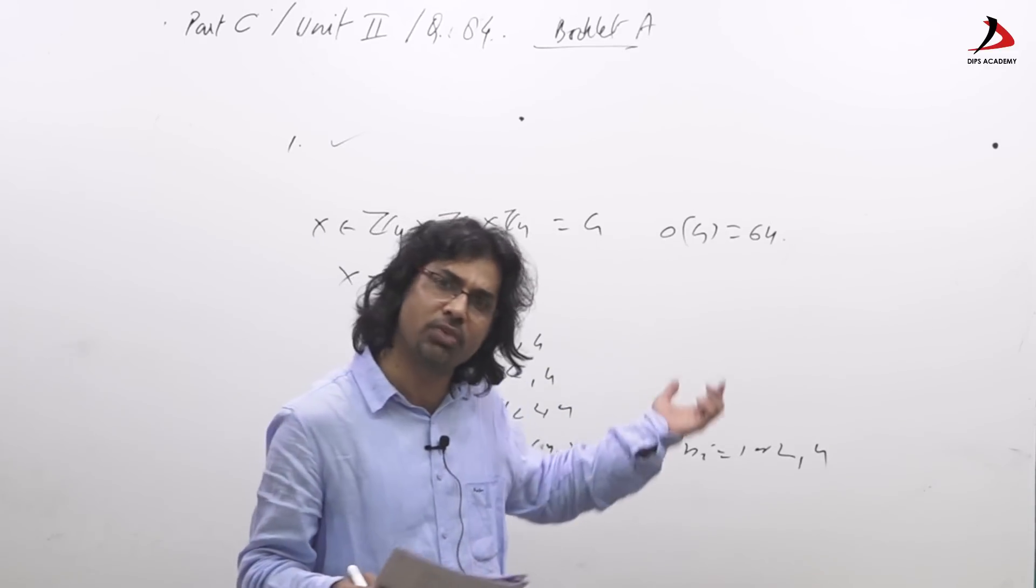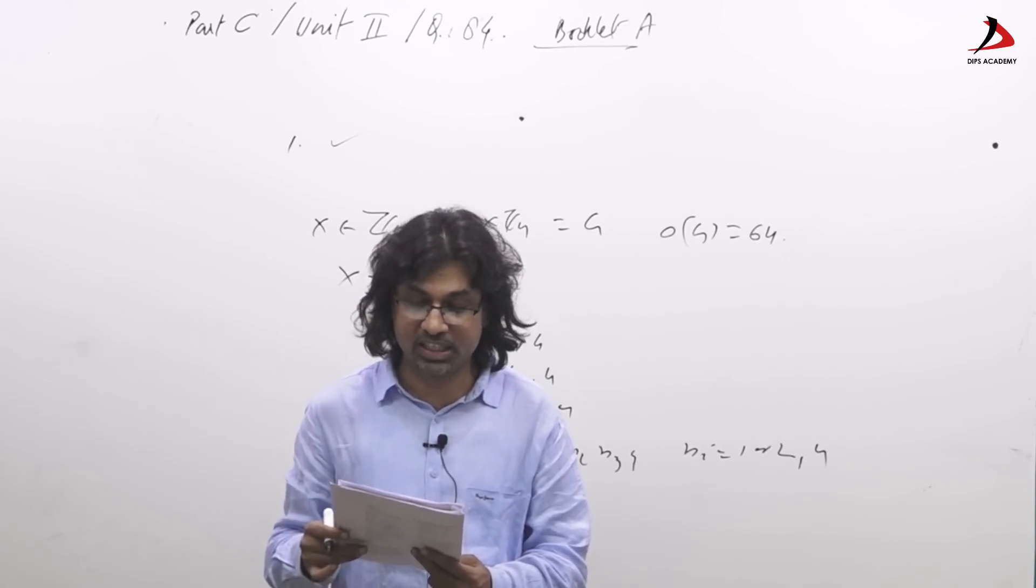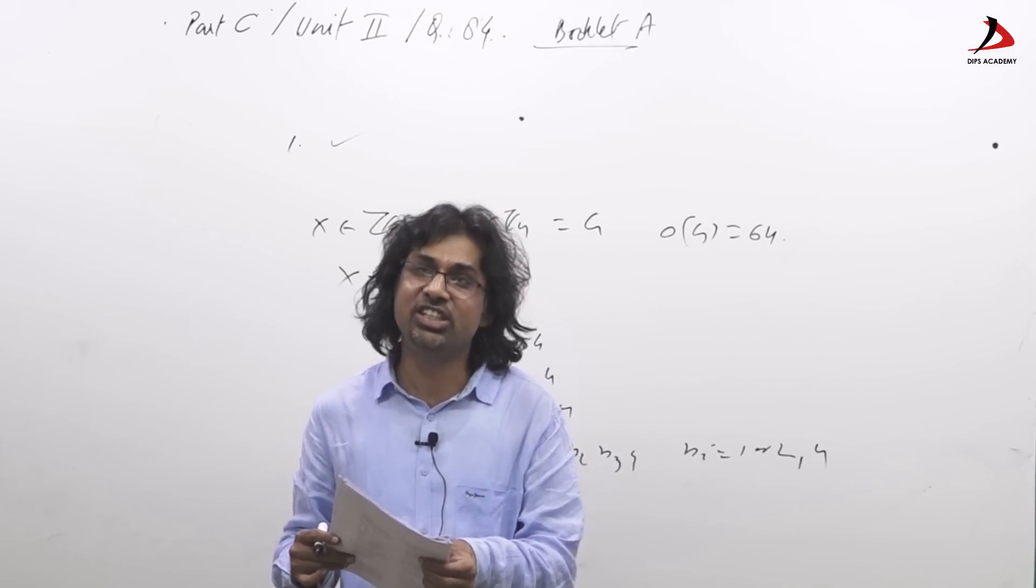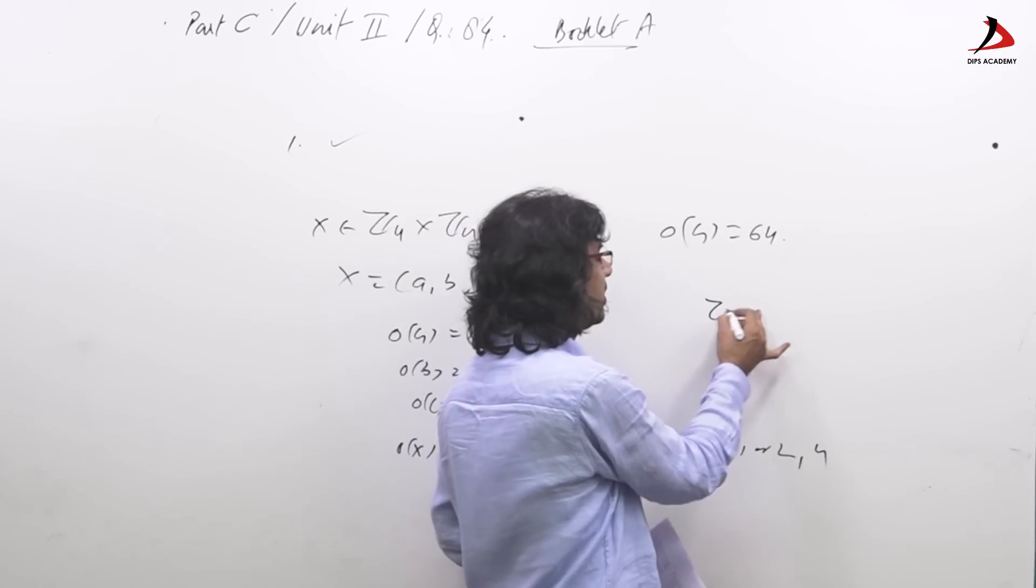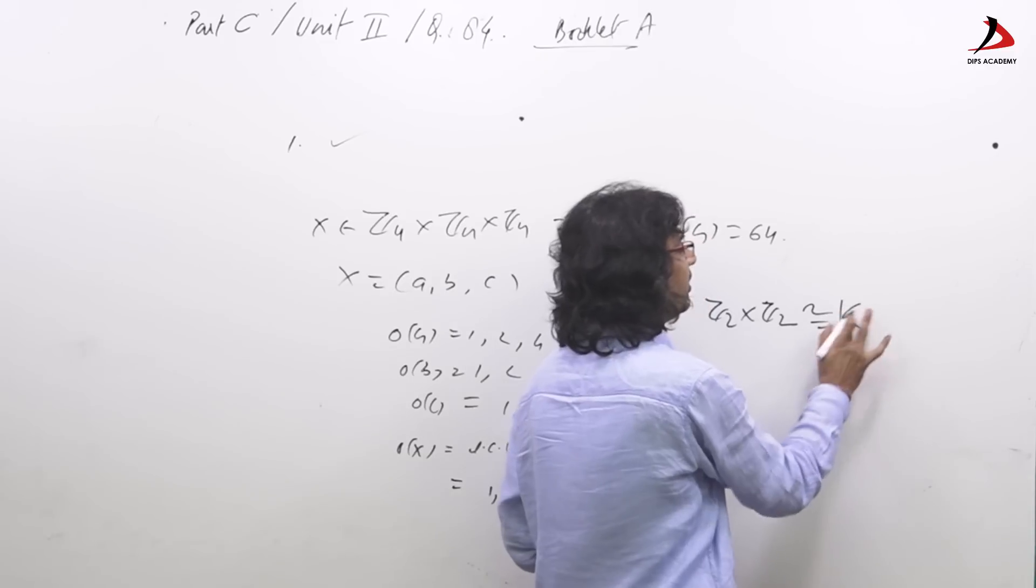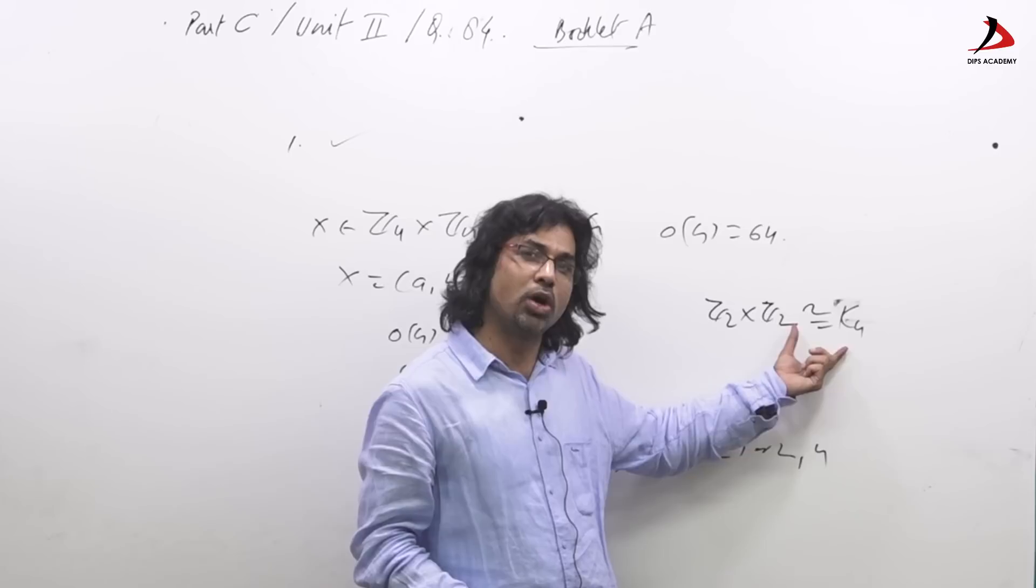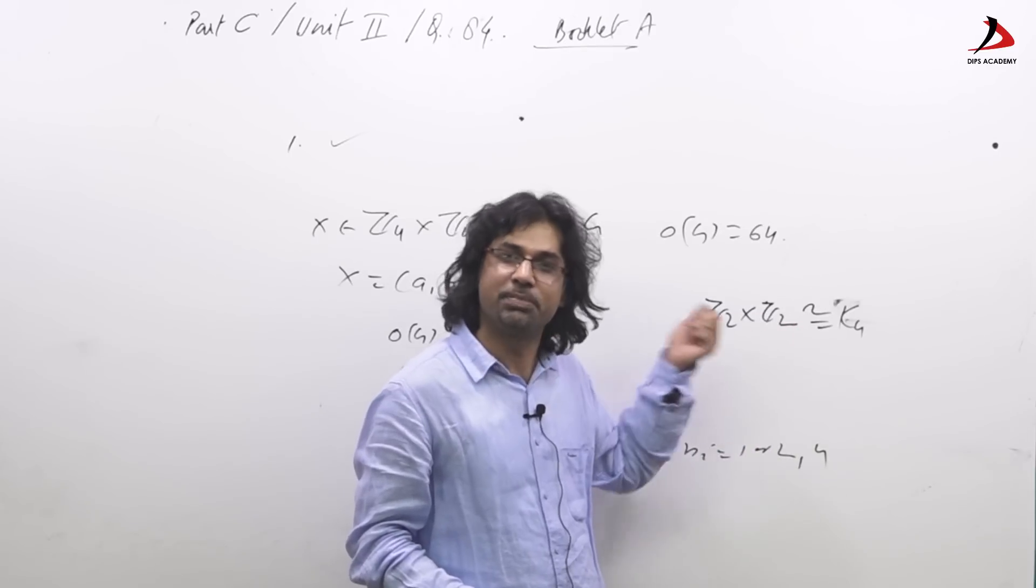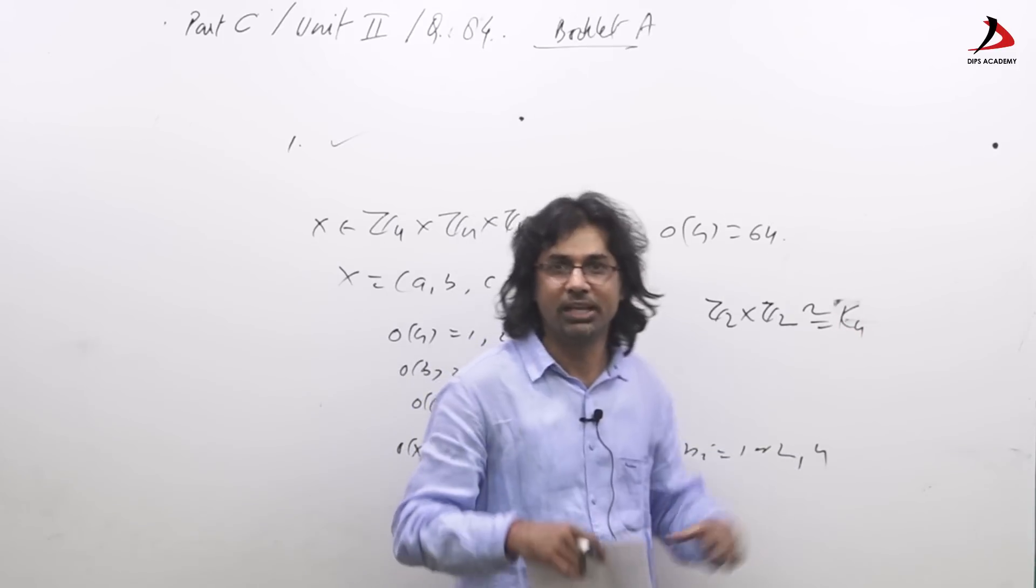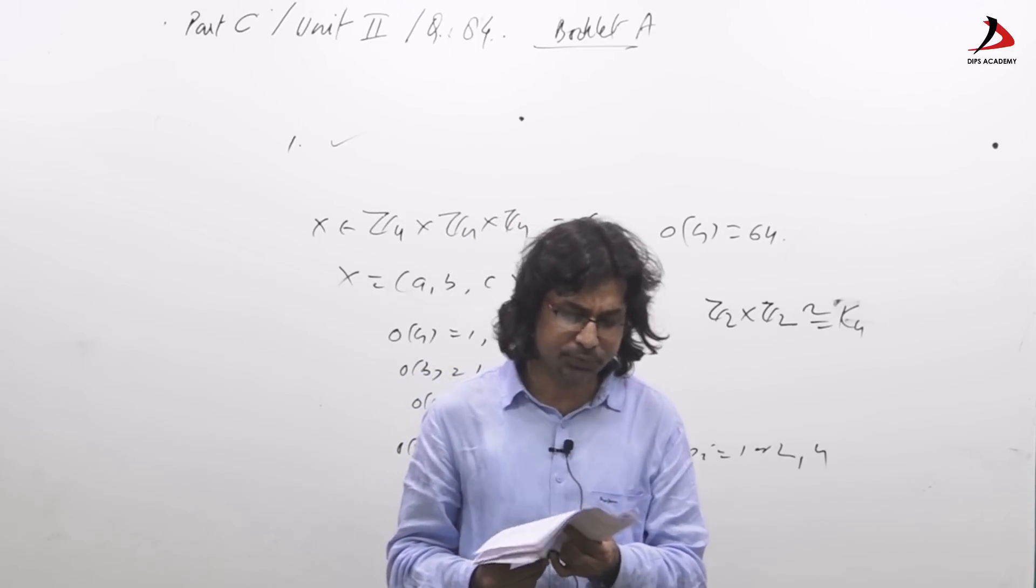Now third: every proper subgroup g is cyclic. If every proper subgroup g is cyclic then g is cyclic. Again the same Z2 cross Z2, that is K4, it has three proper subgroups. K4 is not cyclic so option three is also incorrect.